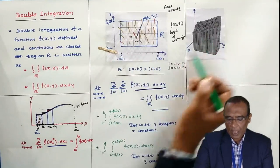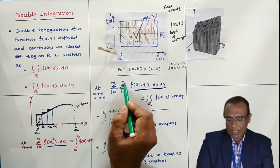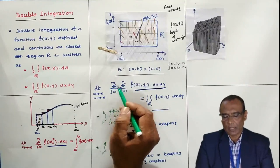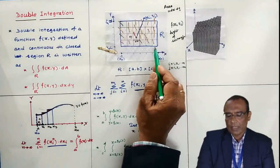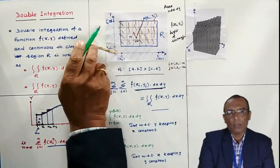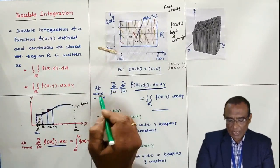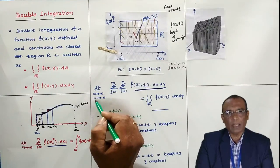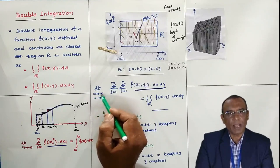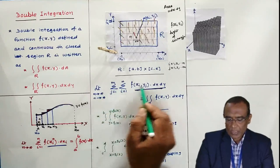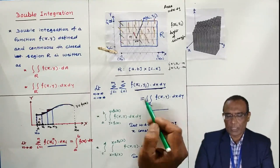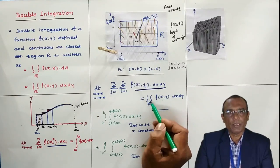Mathematically, the summation of the volume of all sticks has i varying from 1 to n and j varying from 1 to m. If the area of each grid is very, very small, then n and m go to infinity — that is why I have written limit n tends to infinity and m tends to infinity. This can be written as the double integral of the function with respect to x and y. That was the geometrical interpretation of double integration.